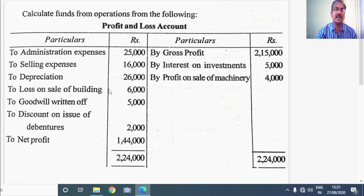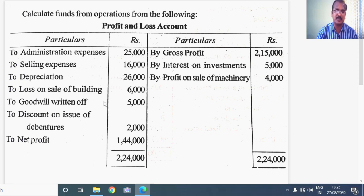Then loss on sale of building — it is a non-operating loss and it is also a non-fund loss, so it has to be reversed and added with the net profit. The next one is goodwill written off, which is a book entry — a non-operating and non-fund expenditure to be added back with the net profit. It doesn't result in increase or decrease in funds. Discount on issue of debentures is also a non-operating activity and should also be added with the net profit.